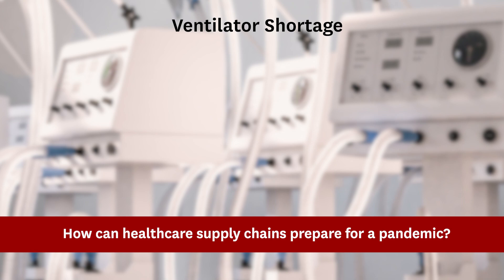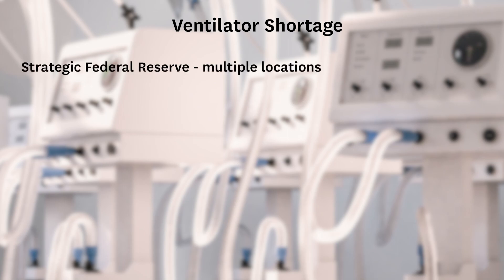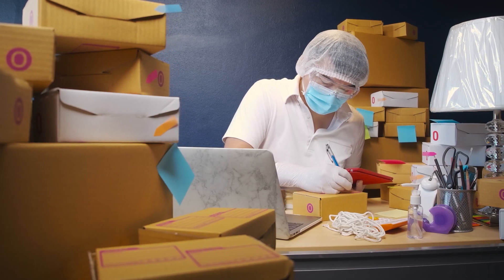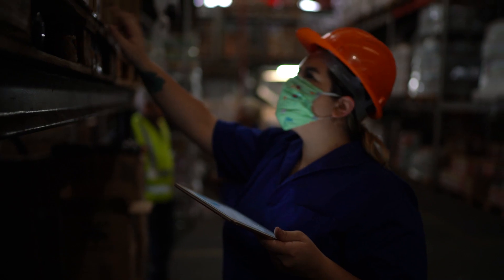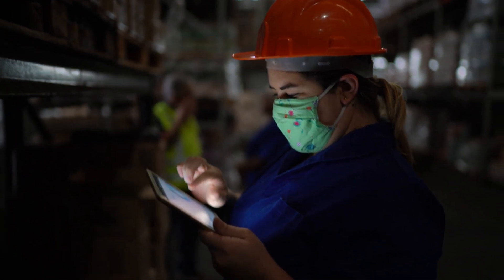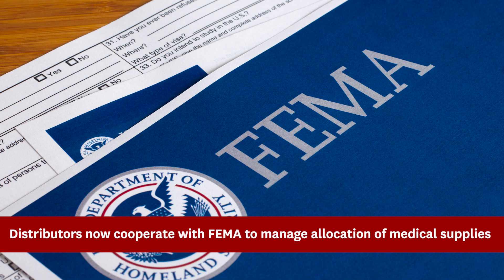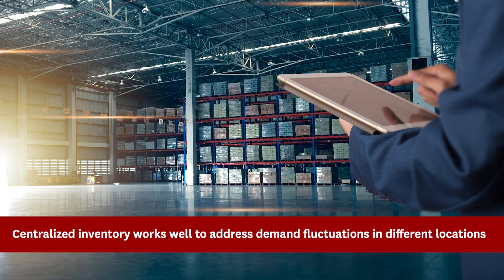How can healthcare supply chains and the government better prepare for significant disruptions? The first thing the federal government needs is a strategic federal reserve — something like we do for oil — for all basic medical supplies like PPE and basic drugs. There is a national stockpile, but inventory of many items was not replenished over the years, and some equipment and masks had become obsolete. We need to manage this national stockpile better, held in multiple locations across the country with good visibility. In fact, many medical distributors in the U.S. are now cooperating with FEMA to manage the allocation of scarce medical supplies and decide which region to send them to, because everybody will overorder in a situation like this.